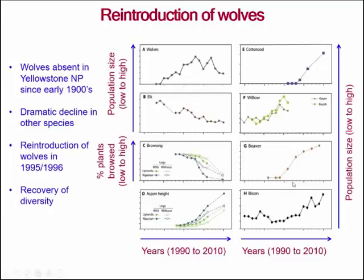Consequently, we see an increase in beaver populations and an increase in bison populations. We can see how the reintroduction of wolves has led to a cascading effect across all trophic levels.